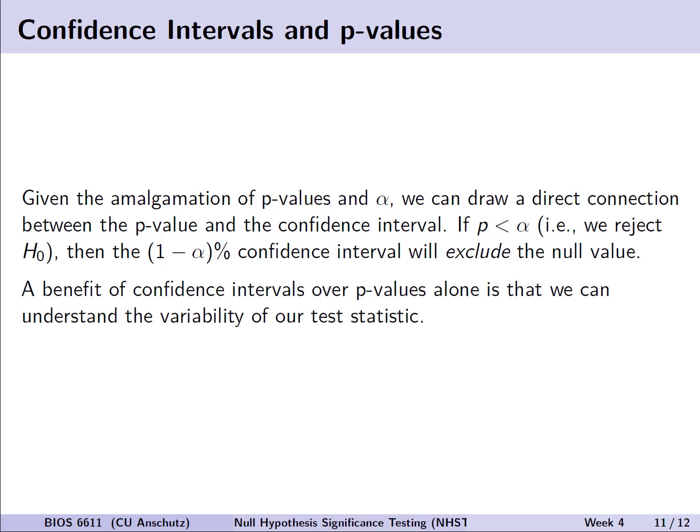A benefit, then, of confidence intervals above and beyond that of p-values alone is that we can understand also some of the variability of our test statistic. And so, just as a brief example to sort of make it a little more concrete, oftentimes we set alpha equal to 0.05 or a 5% chance of making that type 1 error rate where we incorrectly reject the null hypothesis when it's actually true. If we then do a test and we calculate a p-value that's equal to 0.01, because that's less than alpha, we know then that that implies that our 95% confidence interval, because, remember, it's going to be equal to 1 minus alpha percent, that interval will also not include whatever our null statistic of interest is. So, with these two things that we know together, we can be presented with just the confidence interval and derive if it would be a significantly different response if we know what the assumed null hypothesis is.